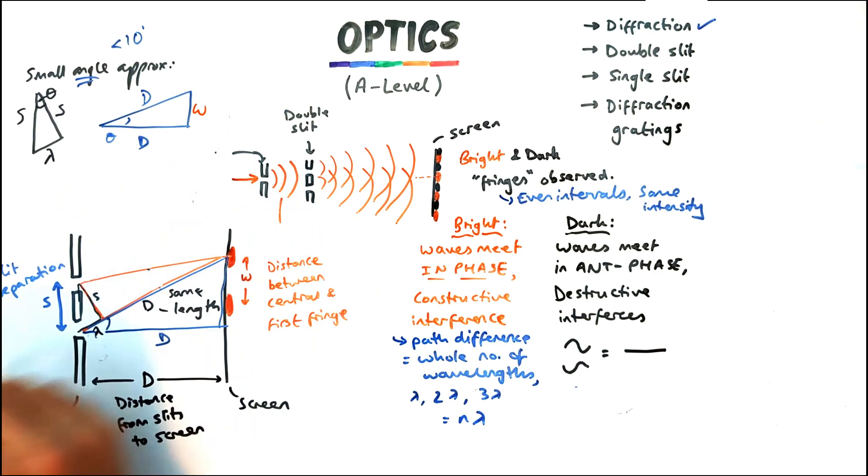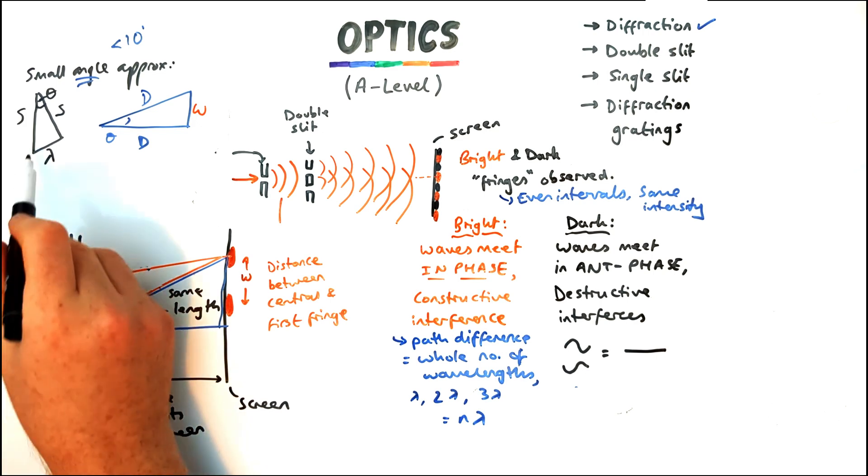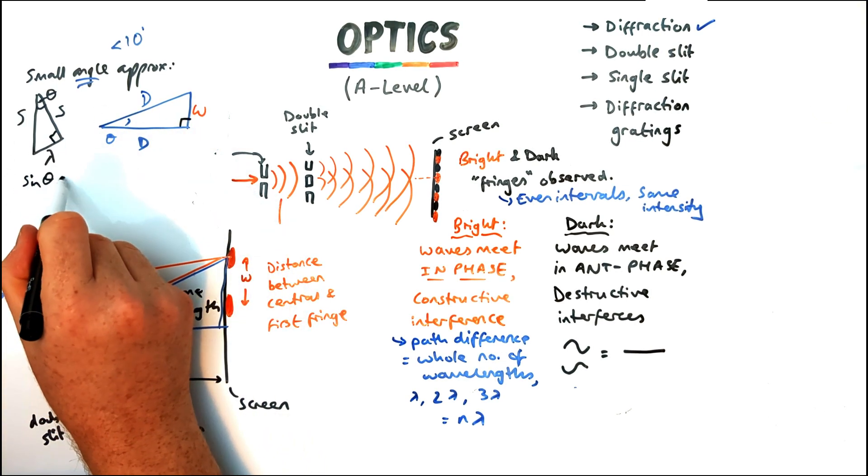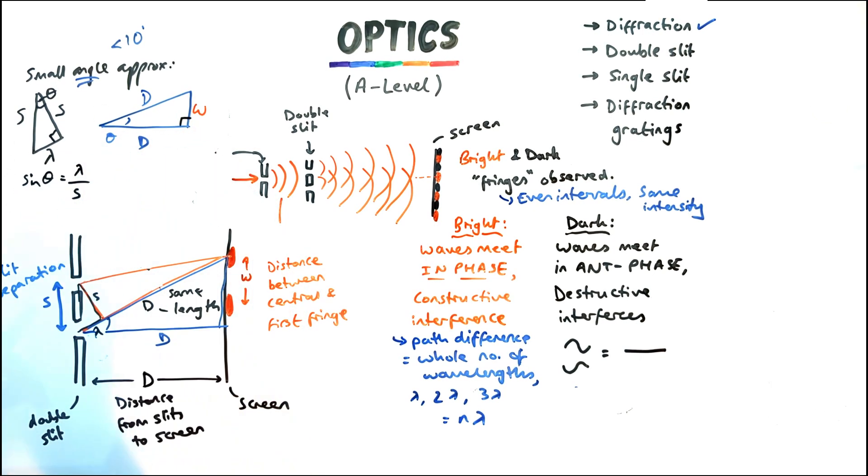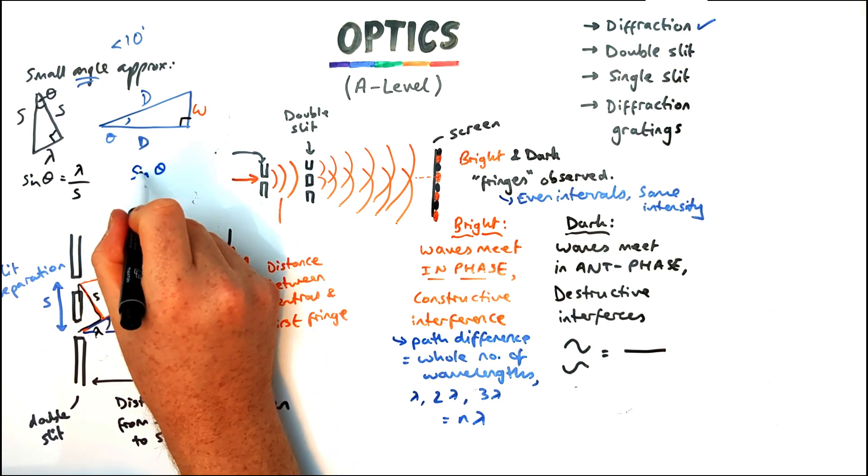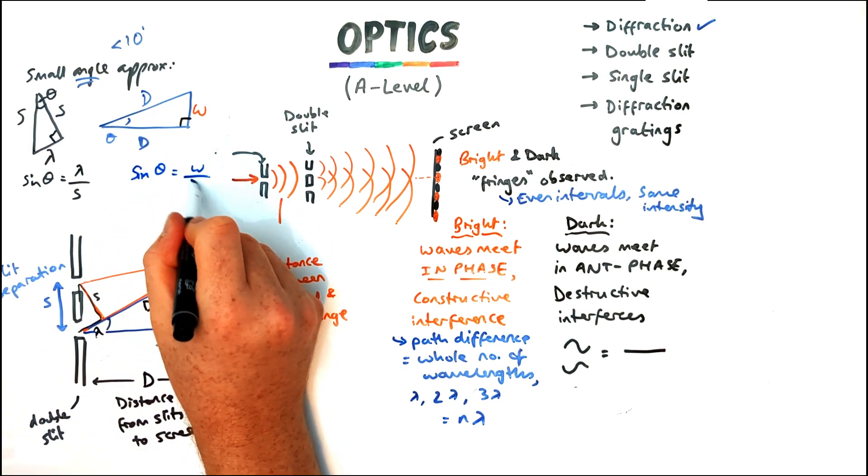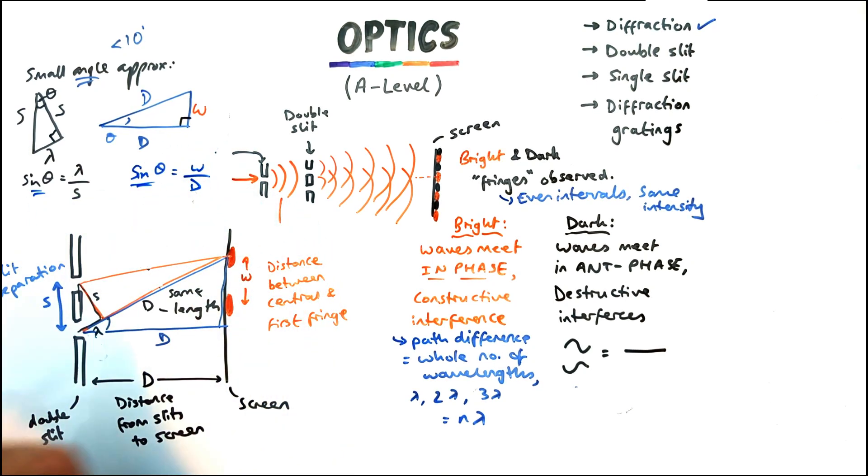Now using this what we can do is just derive a couple of quick relationships using trigonometry. Sine theta of the first triangle is wavelength divided by S, the slit separation. The bigger triangle sine theta equals W over D. Now these are both sine theta so we can equate them together.